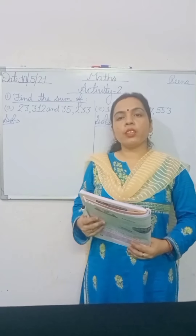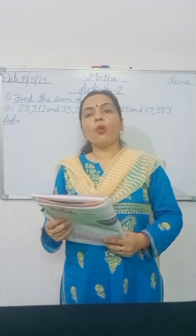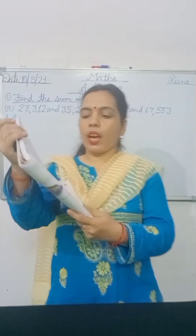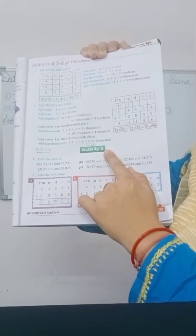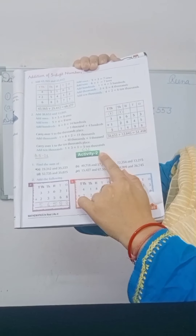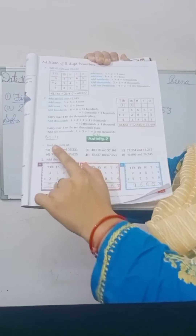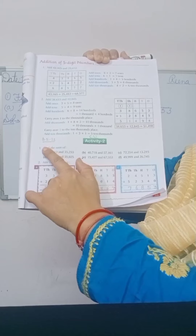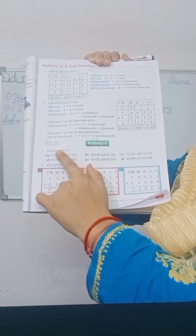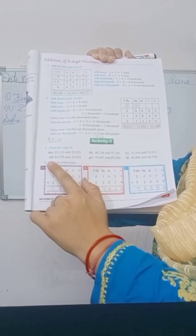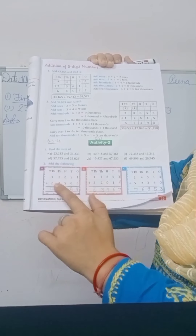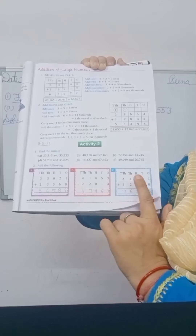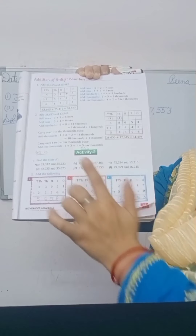Good morning students. Now open your activity number 2. You have given question number 1: find the sum of, and question number 2: add the following. Now add the following — you solve by yourself.